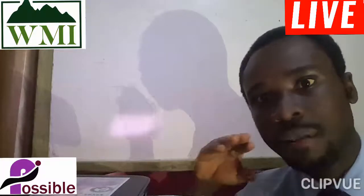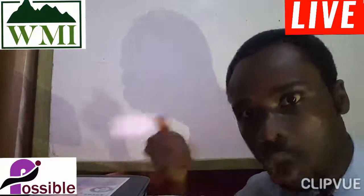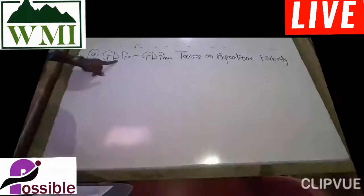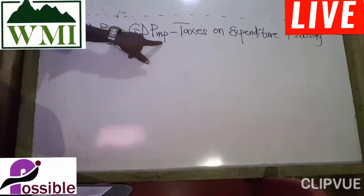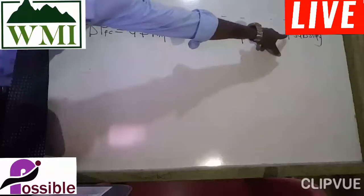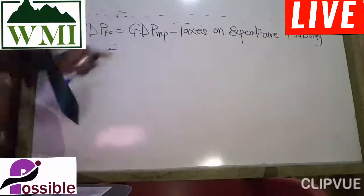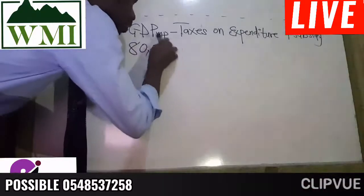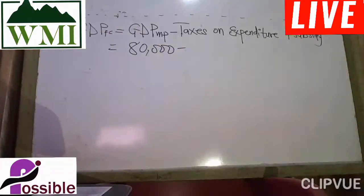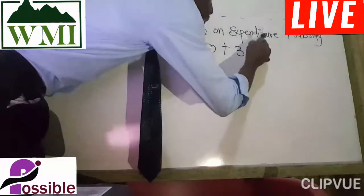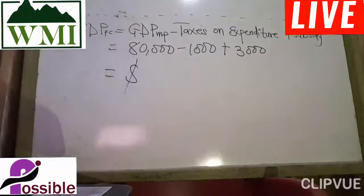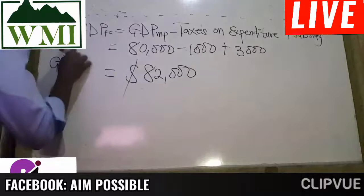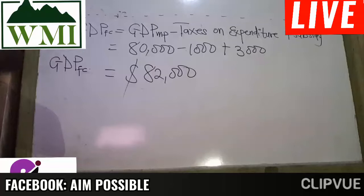GDP at factor cost. Factor cost excludes taxes and includes subsidies. So: GDP at factor cost equals GDP at market price minus taxes on expenditure plus subsidy. That is 80,000 minus 1,000 plus 3,000. Don't forget the currency — dollars. The final answer is $82,000. Therefore, GDP at factor cost equals $82,000.